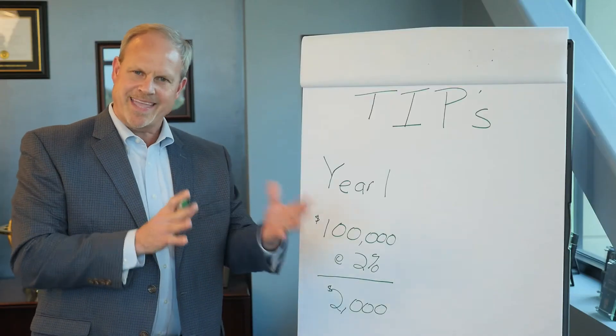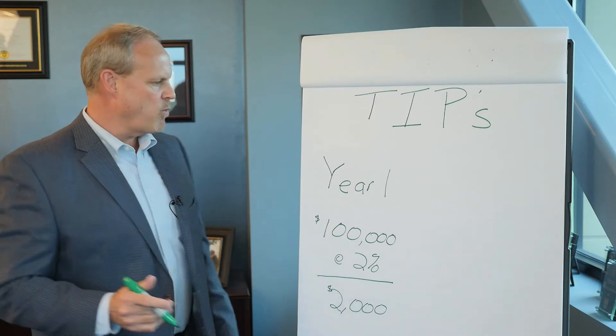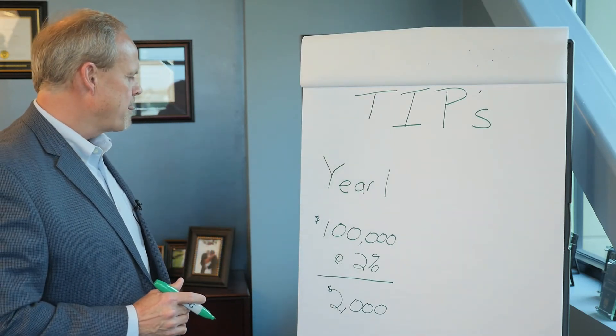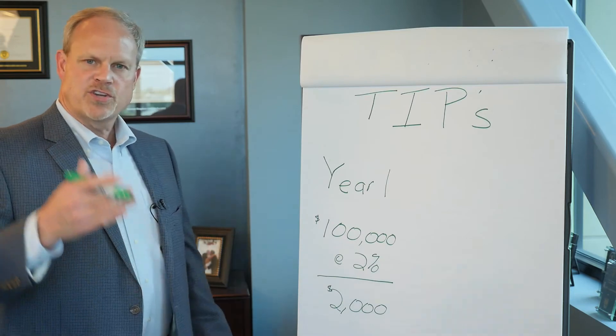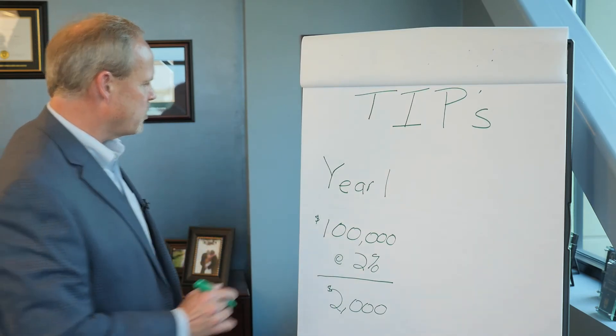Now let's say at the end of the first year the Consumer Price Index increased by one percent. As I mentioned earlier, the coupon doesn't change, but the face value of the bond does, so a one percent increase.